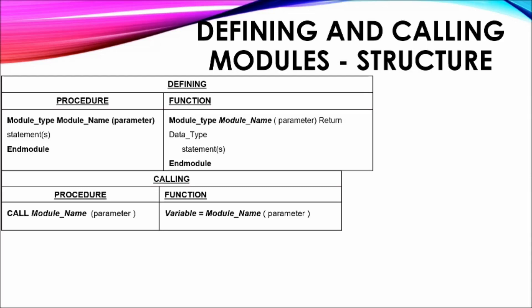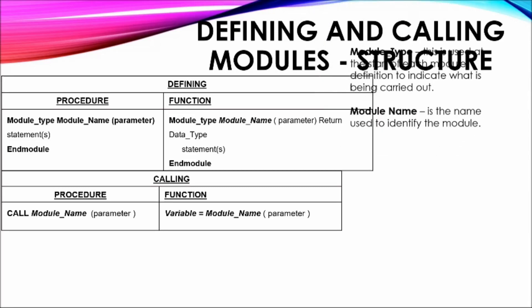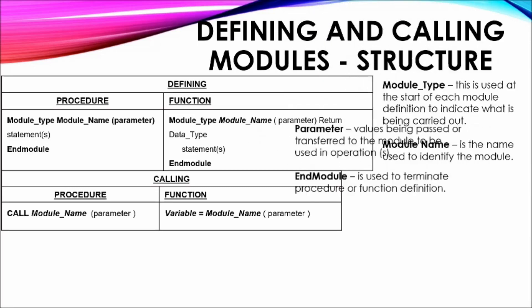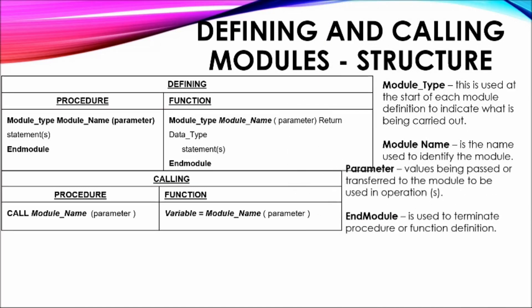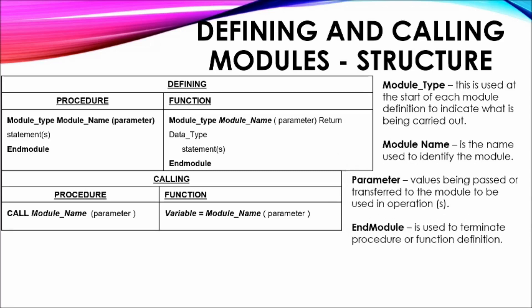A parameter is classified as an item being transferred to the module. These items are generally accepted from the main program and then passed to the module through the procedure or function call.